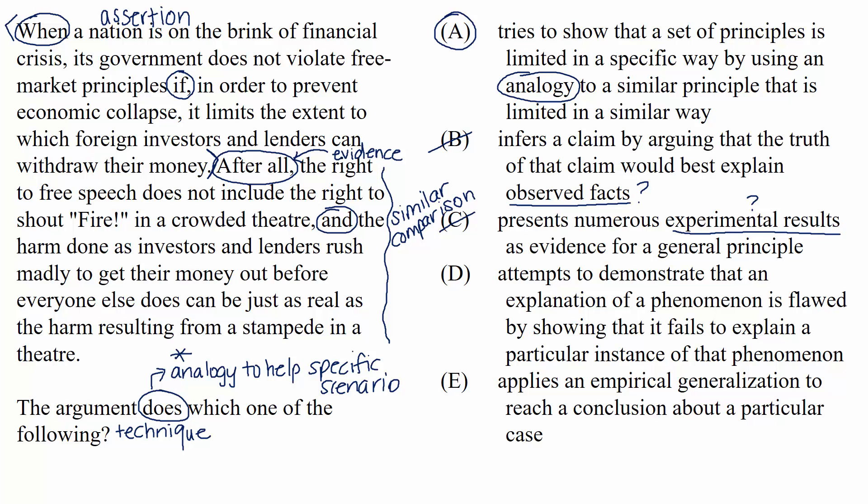D reads, attempts to demonstrate that an explanation of a phenomenon is flawed by showing that it fails to explain a particular instance of that phenomenon. Well, that all sounds very fancy, but if we try to unpack it a little, we'll see that the argument's not trying to show that an explanation of a phenomenon is flawed. There isn't any kind of critique of any kind going on in the passage, so that's why we can eliminate choice D.